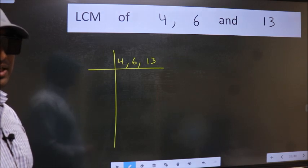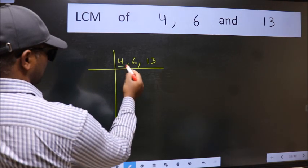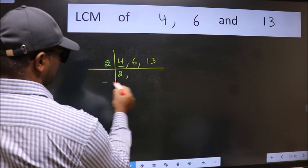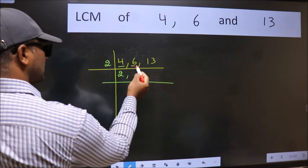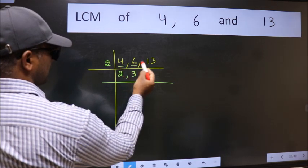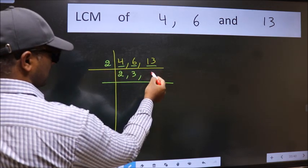Now we should focus on the first number which is 4 here. 4 is 2, 2's 4. The other number 6, when do we get 6 in 2 table? 2, 3, 6. The other number 13, not divisible by 2. So we write it down as it is.